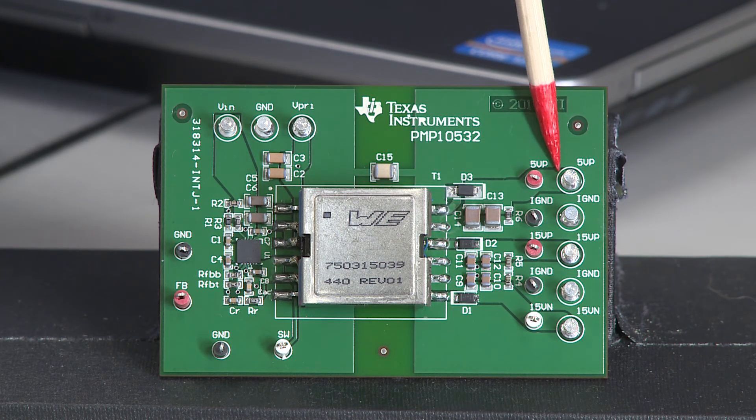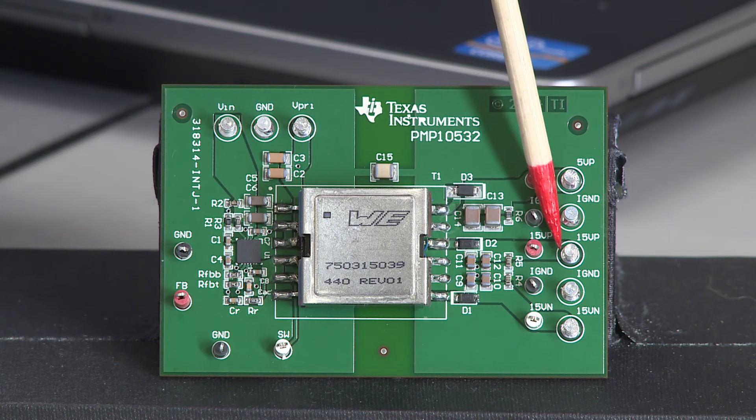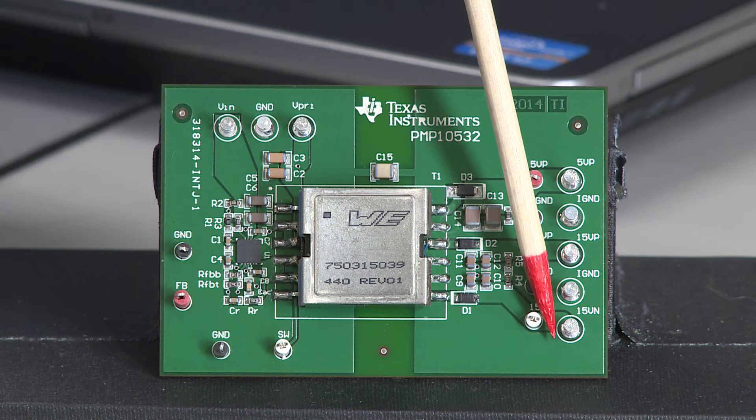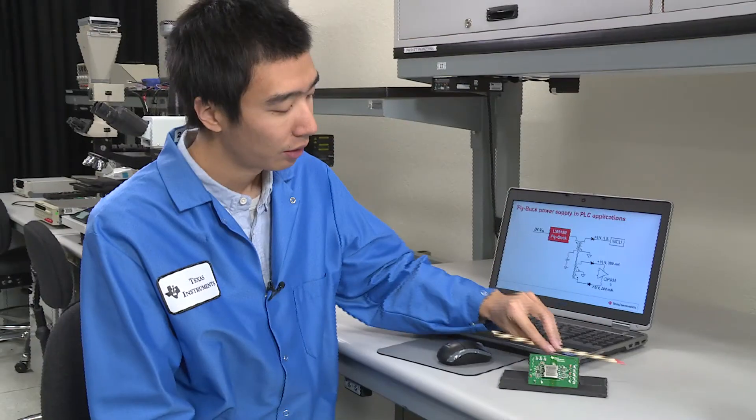Through the transformer, it will create three isolated outputs on the secondary side. There is the 5 volts at 1 amp output, and the plus 15 volts and negative 15 volts at 200 milliamps outputs.